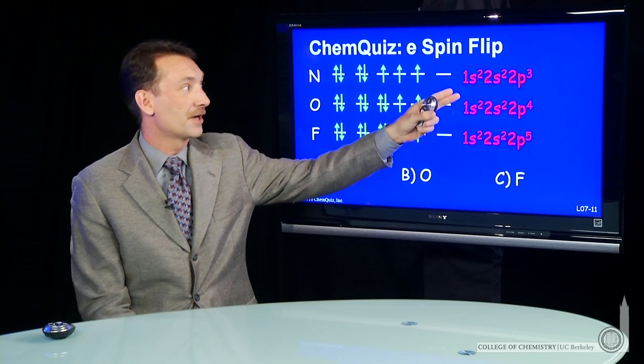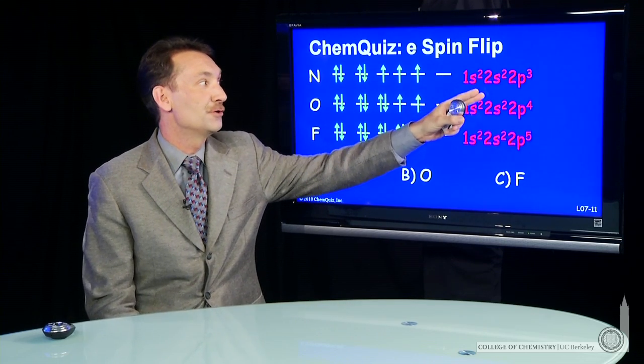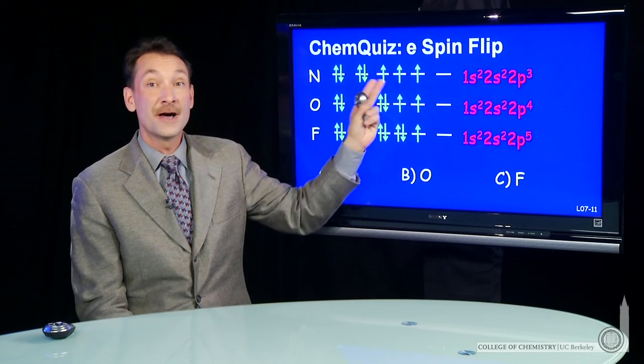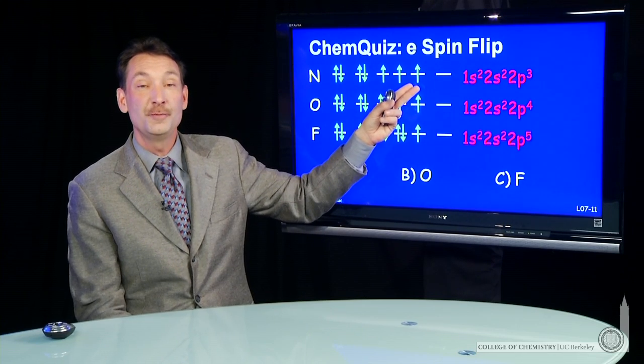Nitrogen has the electronic configuration 1s2, 2s2, 2p3, three unpaired electrons in those 2p orbitals.